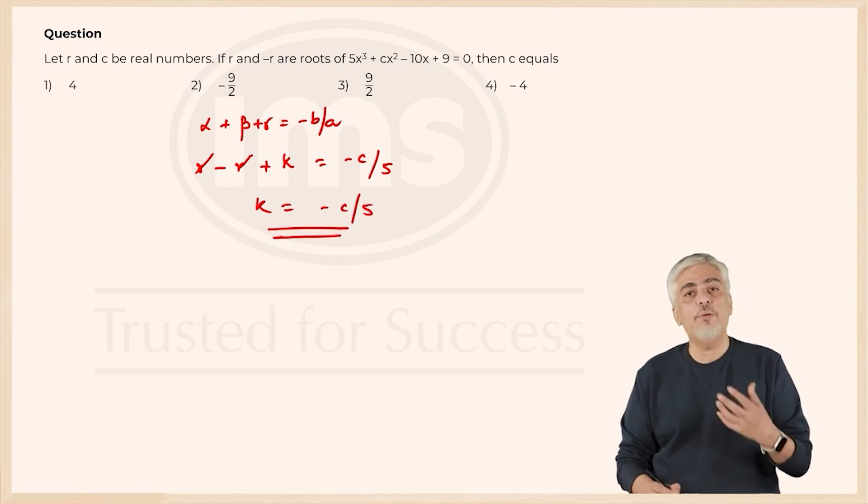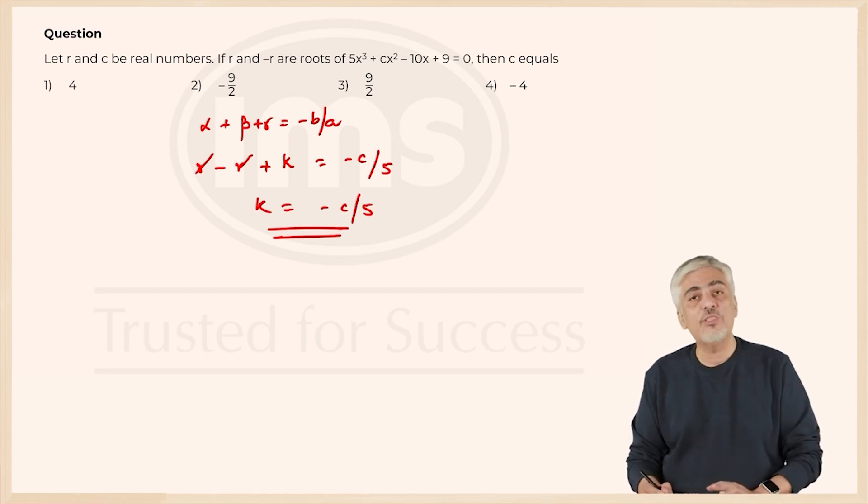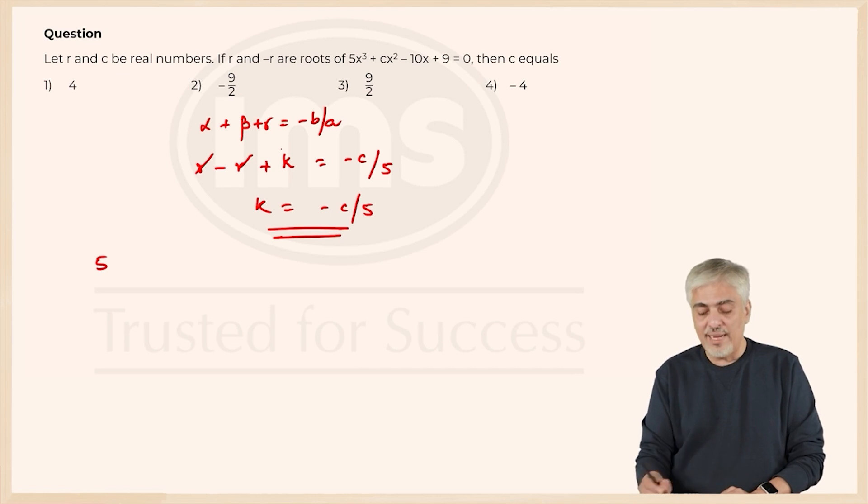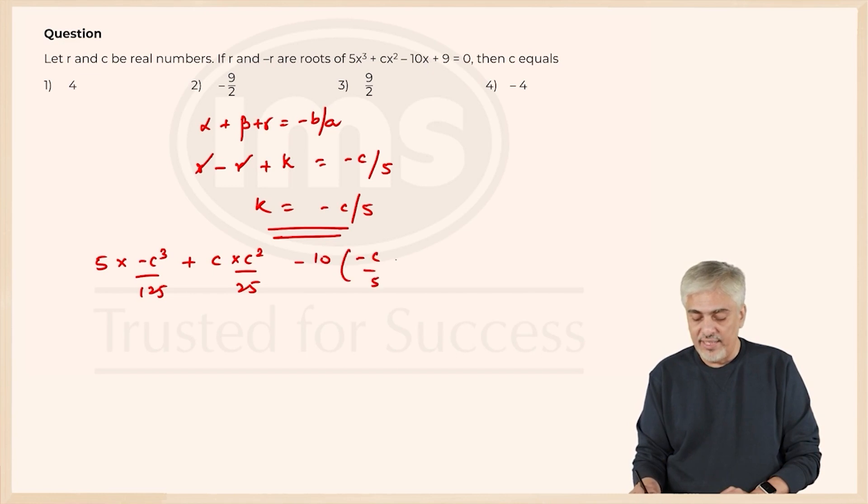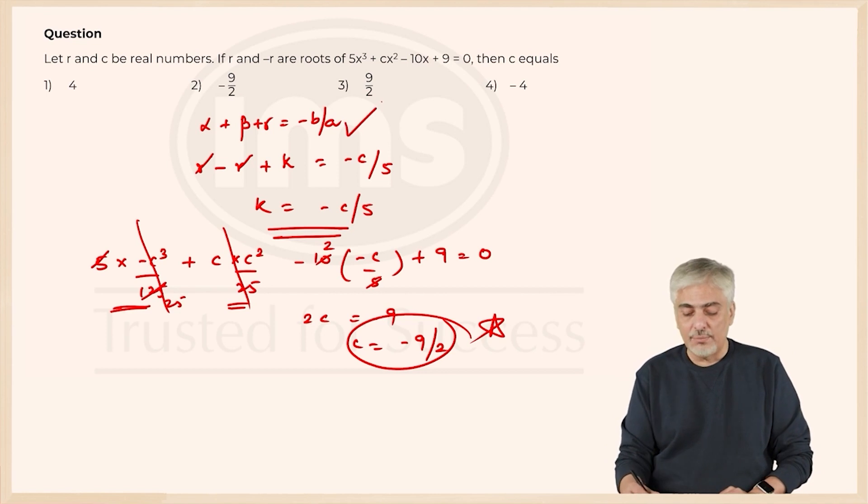So, one of the roots of the equation is -c/5, that means instead of x, if I put -c/5, it should satisfy the equation. So, 5 × (-c/5)³, that will become -c³/125 + c × (-c/5)², that will become c²/25 - 10 × (-c/5) + 9 = 0. Now, if you notice these two will cut out because this is 5/125, this is -c³/25 and this is positive c³/25. So, this cuts out with this. We are left with 5 1s are 5 2s are cut out, so we are left with 2c + 9 = 0. So, 2c = -9, c = -9/2. That was the second approach for this question by using sum of the roots property.